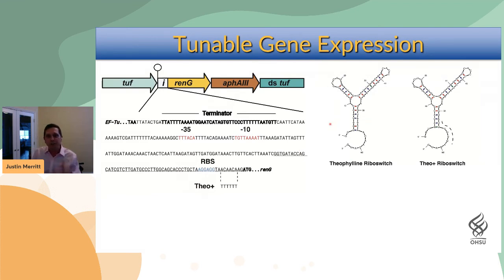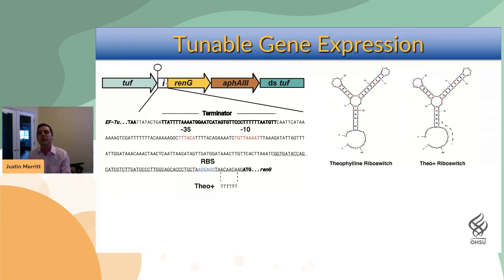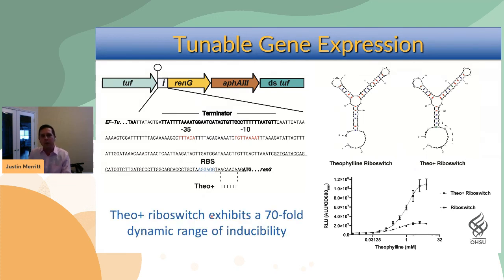To create a tunable gene expression system for inducible expression, what worked best was post-transcriptional regulation rather than transcriptional. We used the theophylline riboswitch — a small RNA element inserted in the 5' UTR of a gene to control translation. We mutated this riboswitch into what we call the Theoplus riboswitch to improve its performance, achieving a 70-fold dynamic range of inducibility depending on theophylline concentration. Theophylline is a non-toxic small molecule from the xanthine family that resembles a nucleotide.